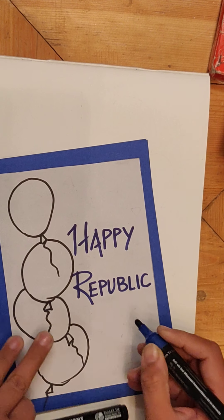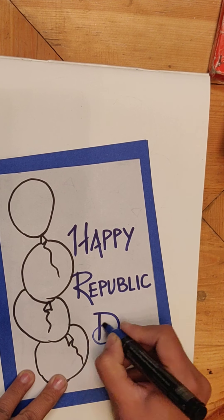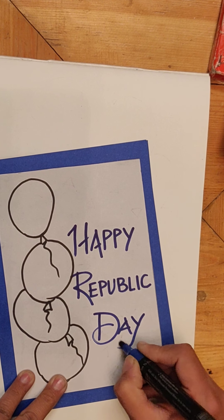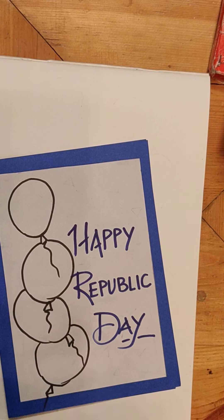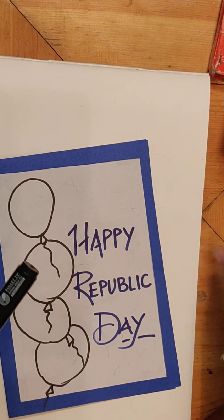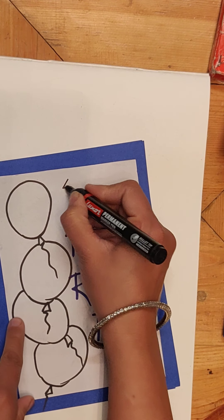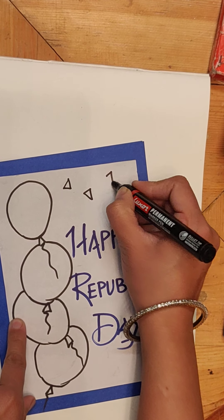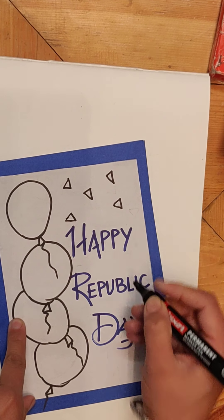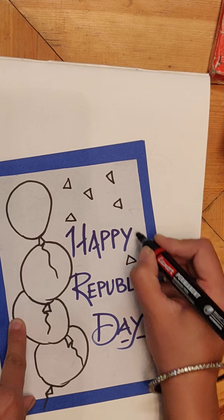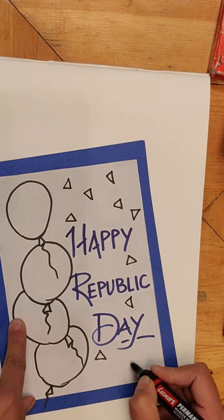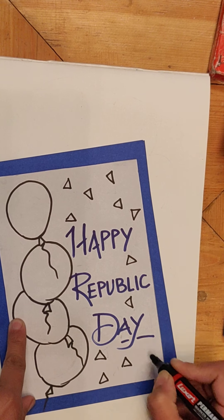While writing, just make sure that all your alphabets are of similar size. What I was planning was I will add a few triangles to it, just a few triangles here and there to beautify it. As the theme is Republic Day, we have to use the tricolor.